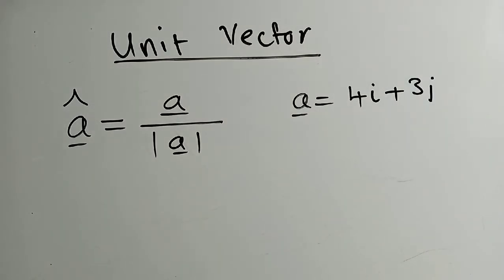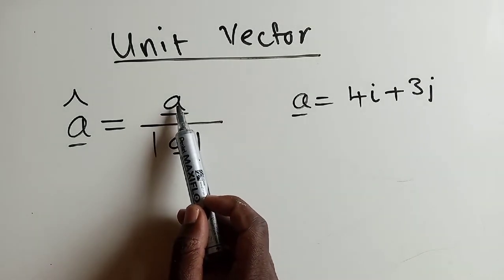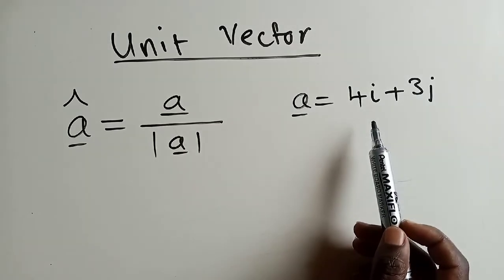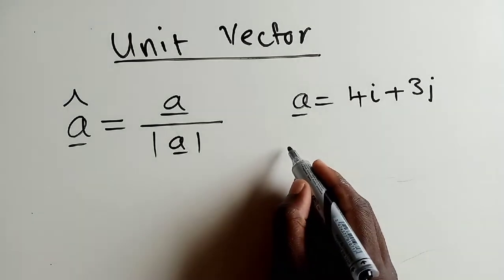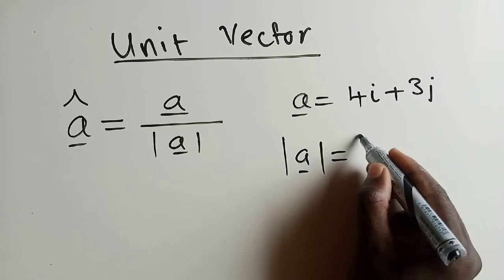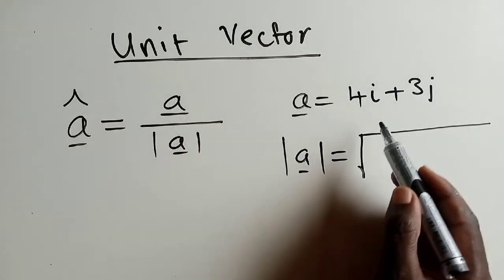For vector a, we have it here, so we just copy it as it is. Our task is to find the magnitude. How do we find the magnitude? The magnitude can be found by using the formula: the square root of 4 squared plus 3 squared.